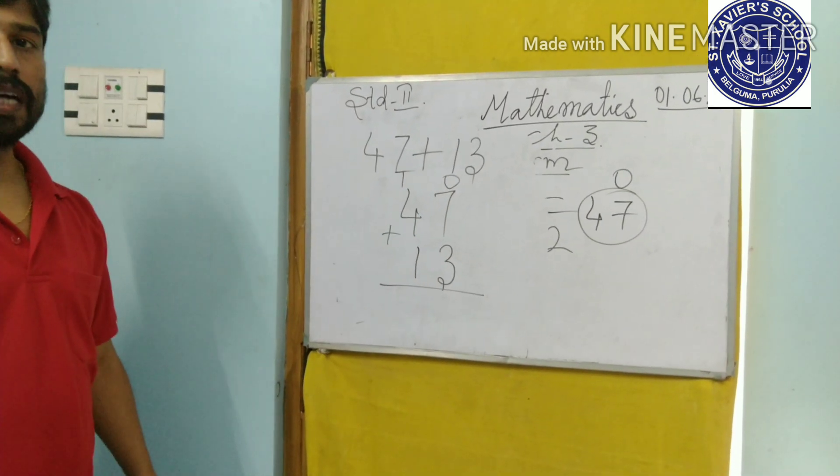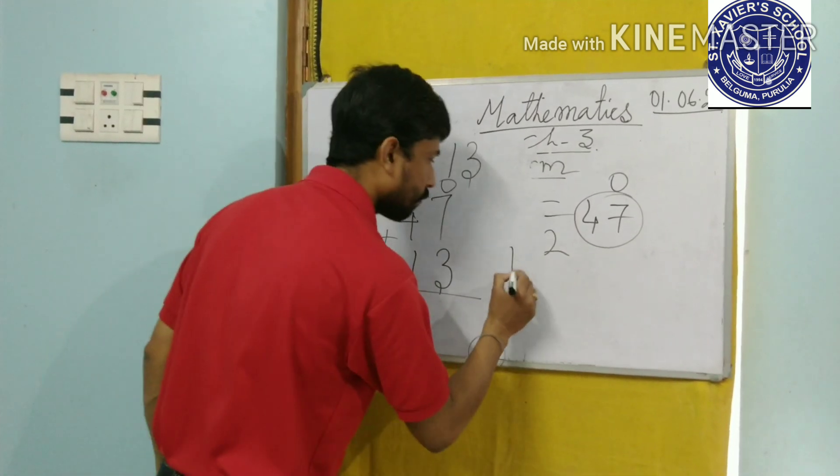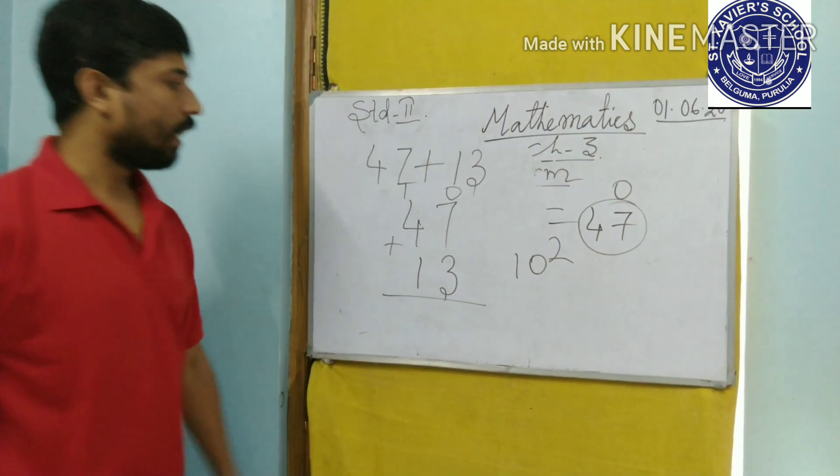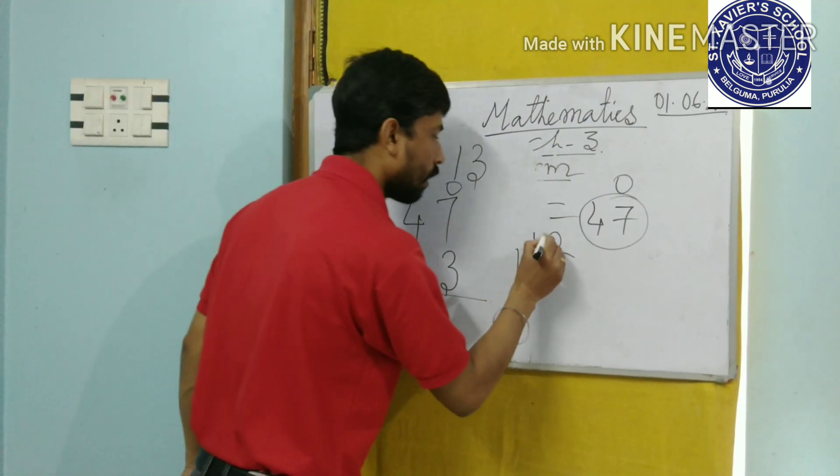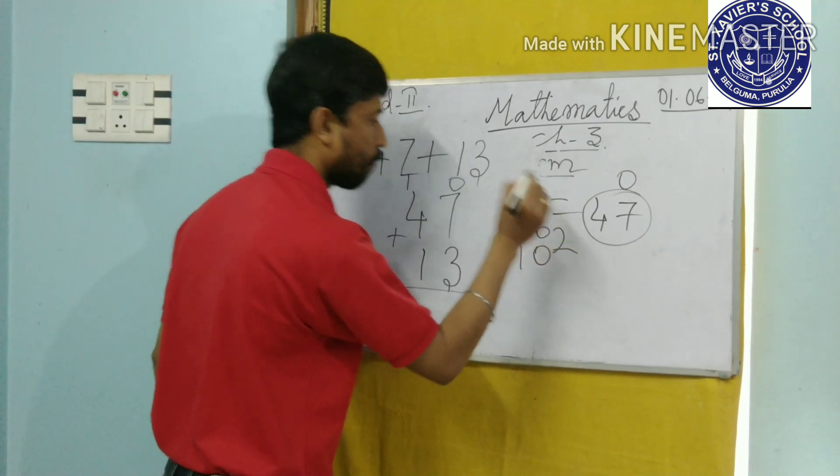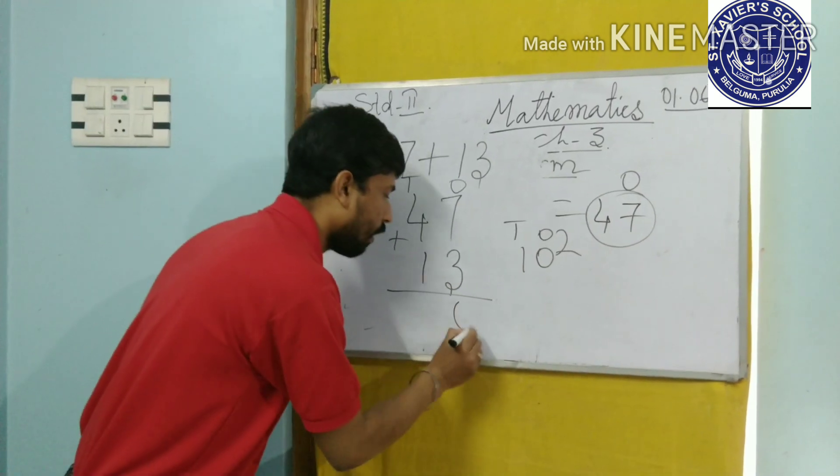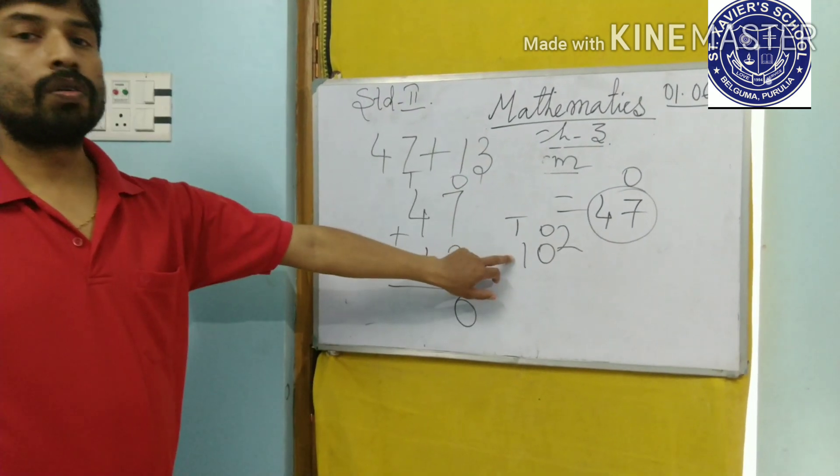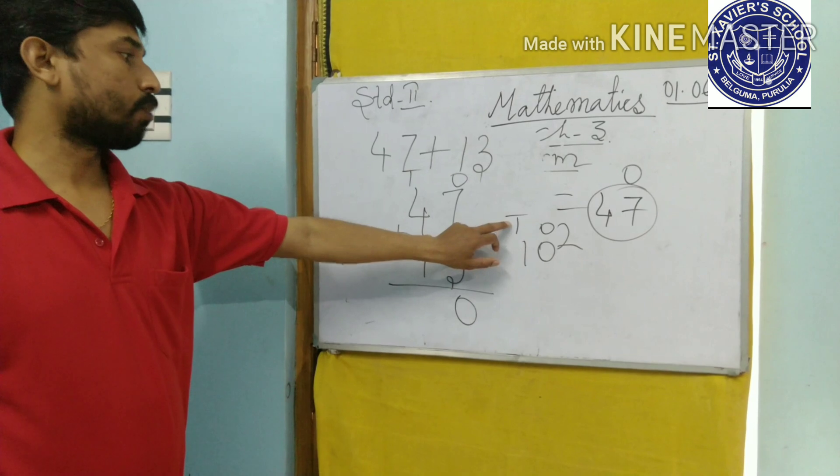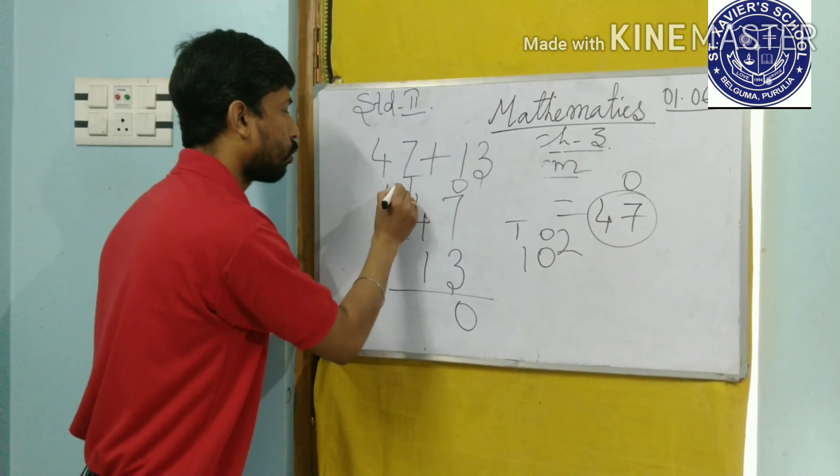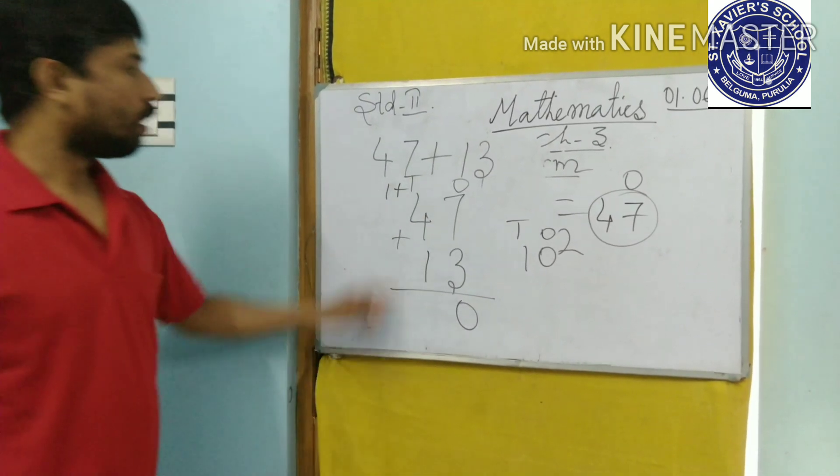Then, add 7 plus 3. What comes? 10. In 10, 0 comes under 1's place and 1 comes under 10's place. So as it comes under 1's place, 0 will come here. And then, where will the 1 go? As 1 is under 10's place, it will be connected to 10's place.